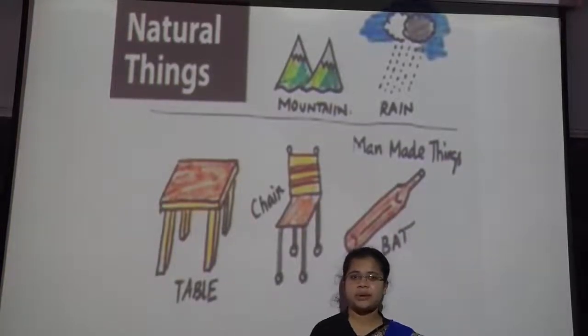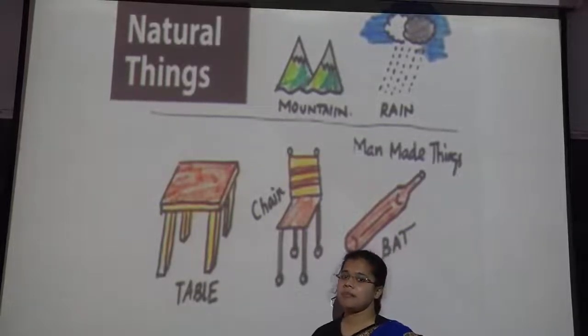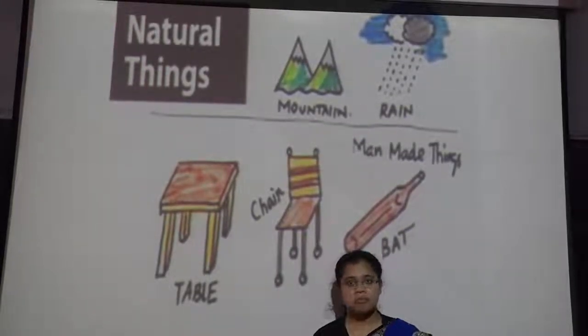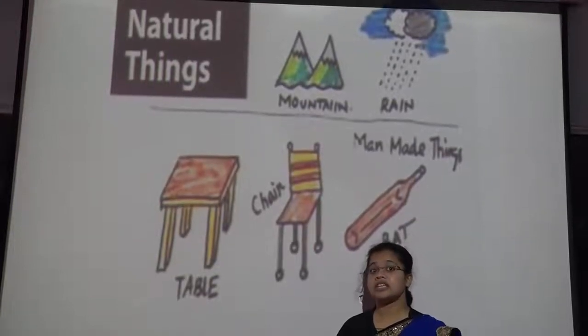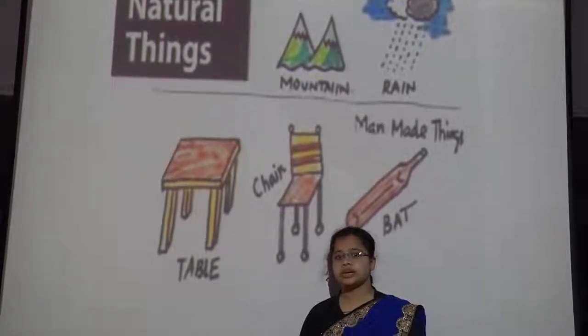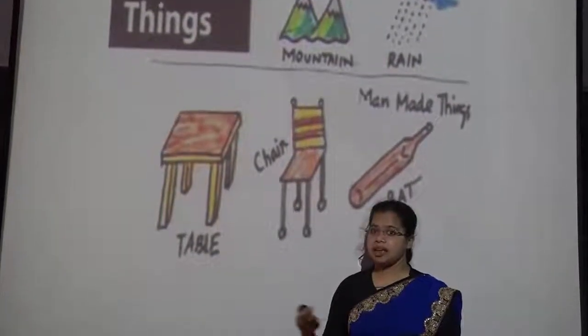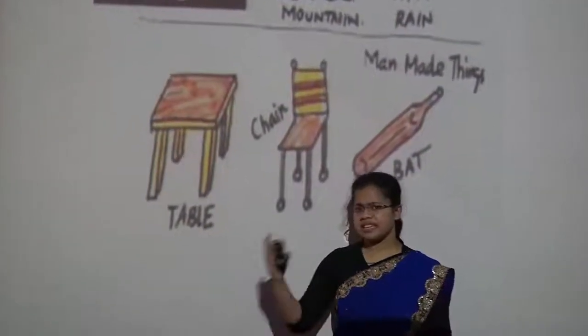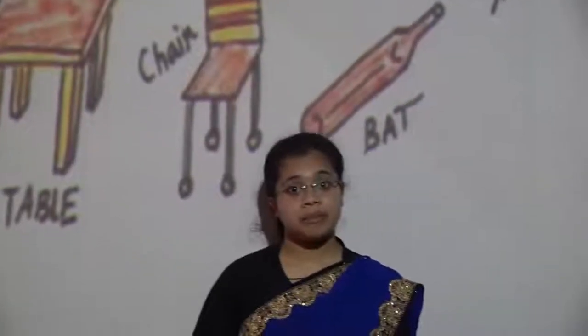Man-made things are things made by man and do not have life in them — although a car moves from one place to another, it does not have life. Man-made things include tables, chairs, desks, windows, fans. I hope you enjoyed the class and will be able to classify different things into natural things, man-made things, living things, and non-living things, and answer all questions based on this chapter. Thank you. Have a nice day.